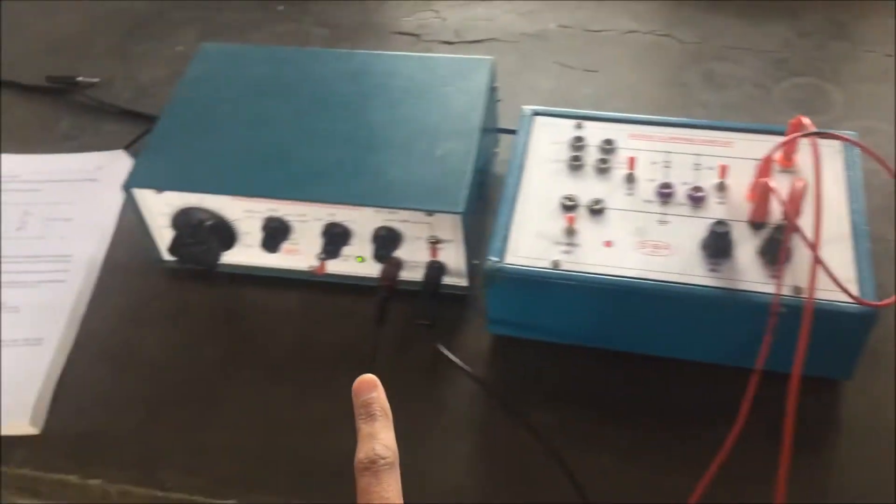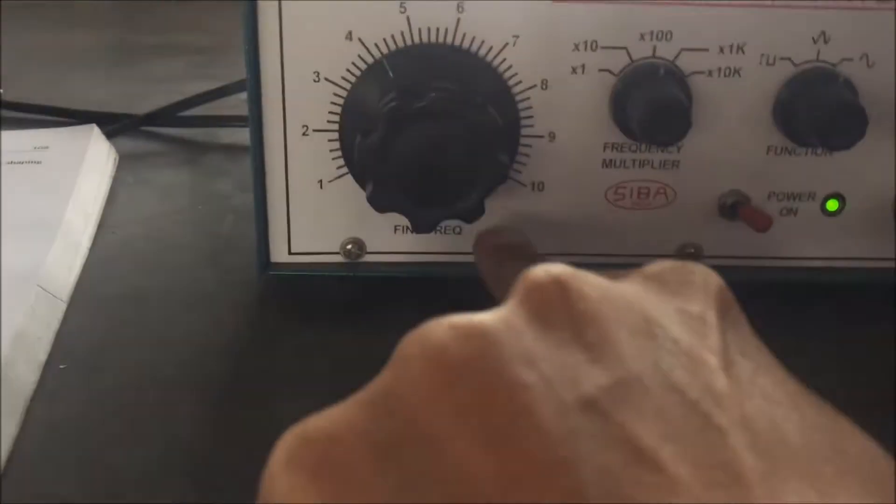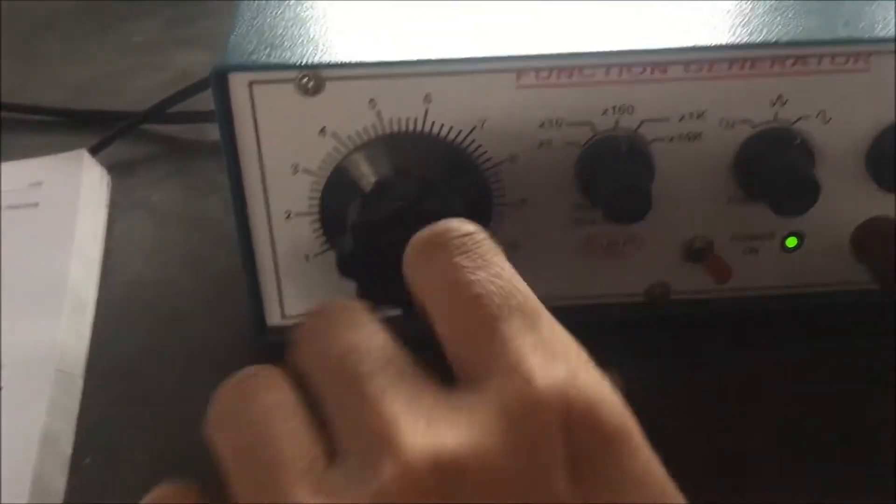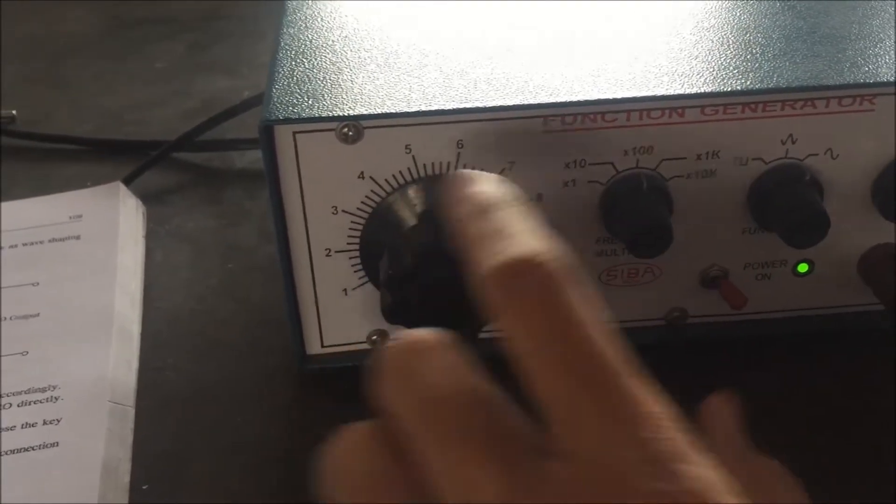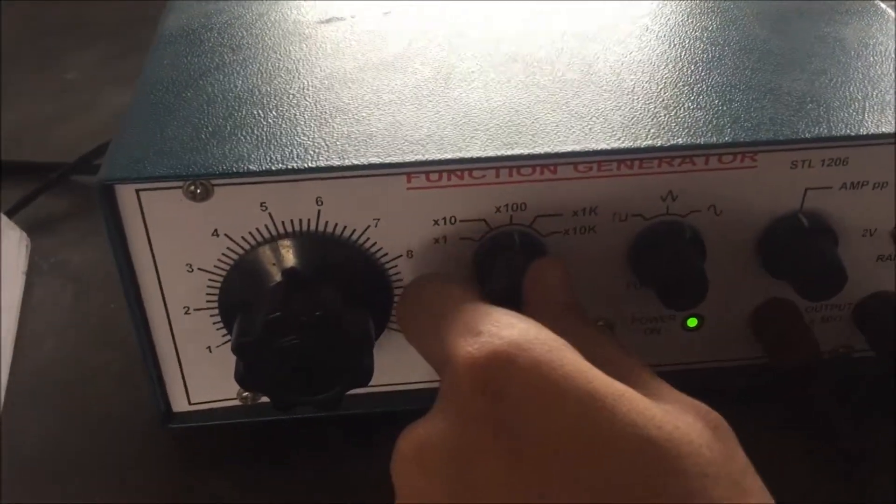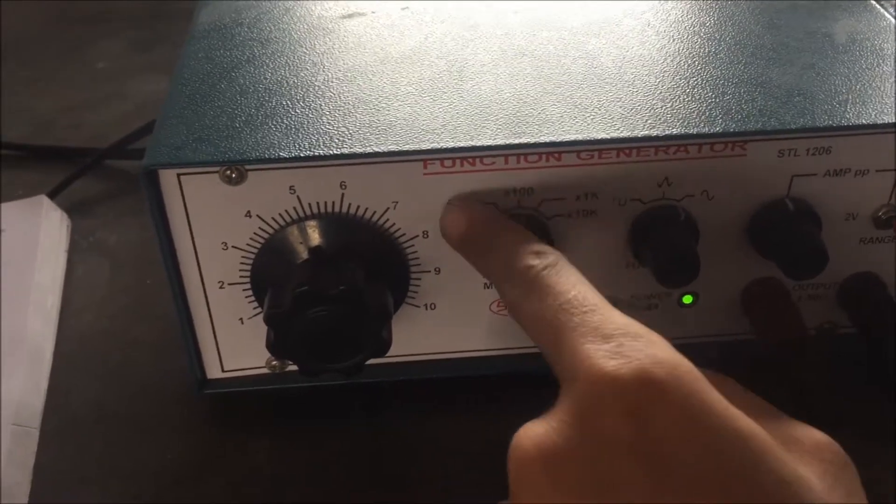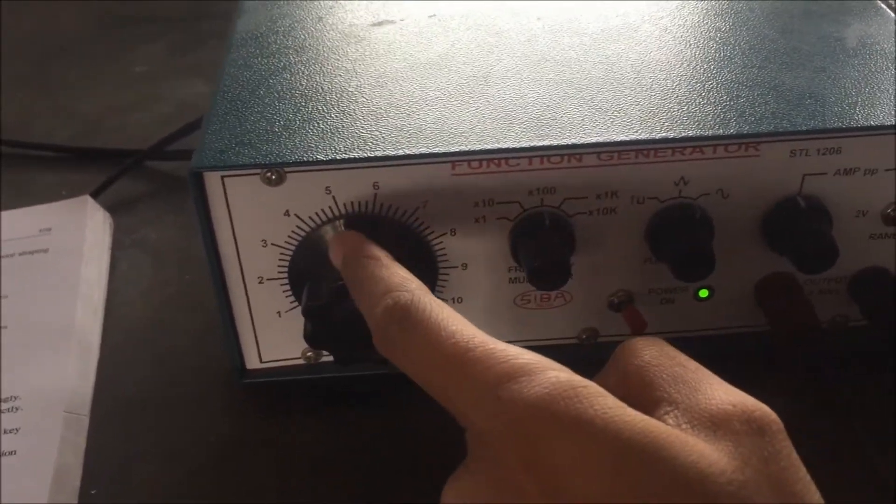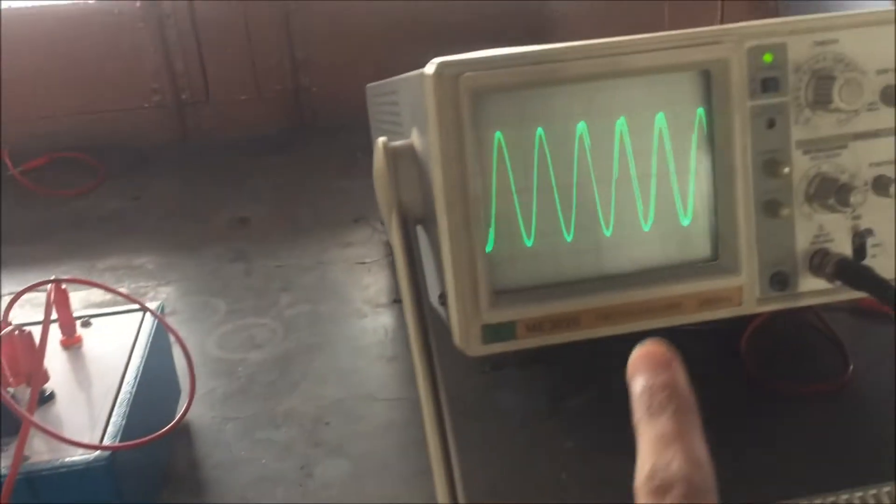So first of all, let me explain the function generator. In the function generator, this is the fine frequency knob, so you can choose any value from this knob. Suppose here I have 5 and this is the multiplier, so you can take the multiplier 100, 1000, 10000, 10, or 1. So if I have 100, it means my frequency is 5 times 100, 500 hertz. This is the output.